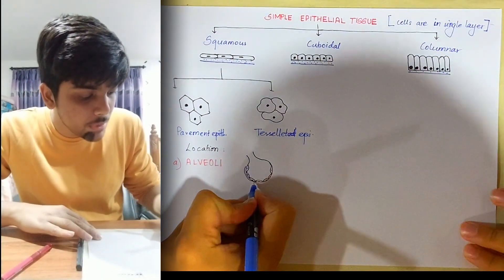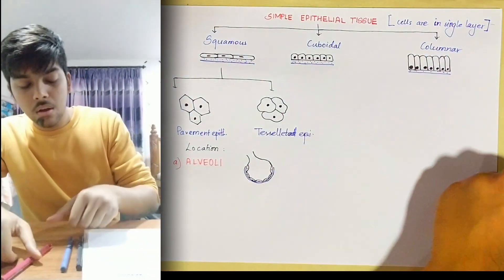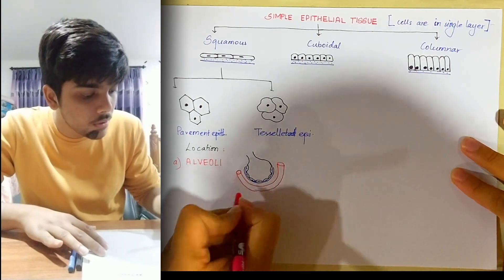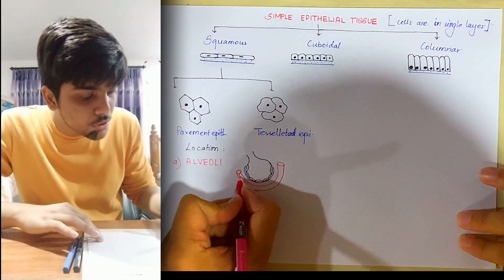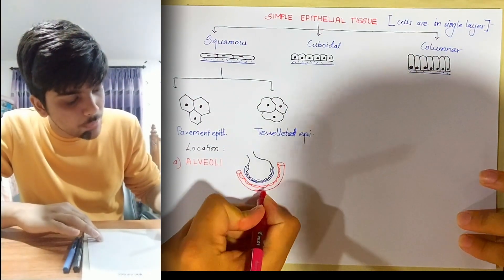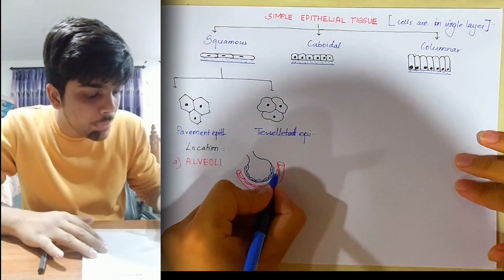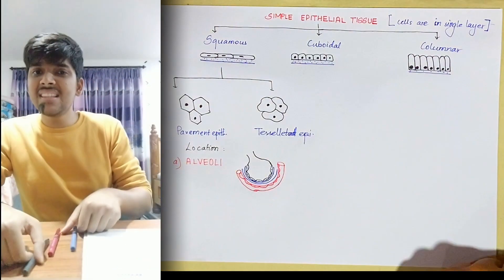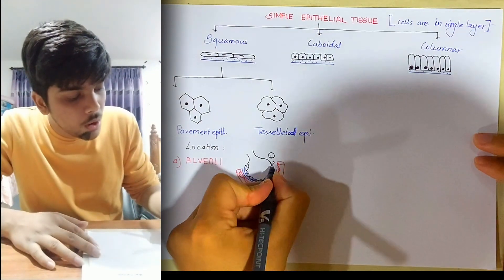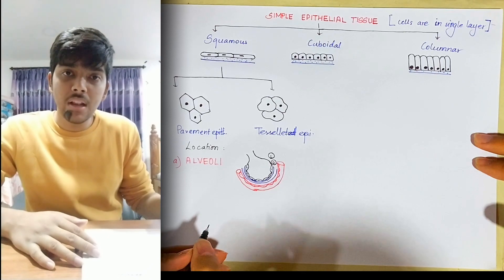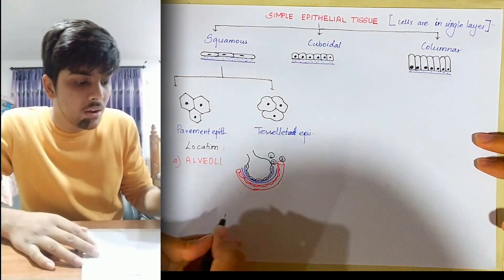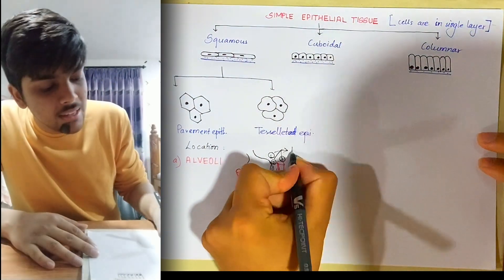There is the basement membrane of the simple squamous epithelium of the alveoli. Associated with the alveoli is a capillary that carries blood; the wall of this capillary is also made up of simple squamous epithelium with its own basement membrane. So these three layers — number one: the simple squamous epithelium lining the wall of the alveoli; number two: the fusion of the basement membranes of the alveoli and capillary; and number three: the simple squamous epithelium of the capillary — together form the respiratory membrane.